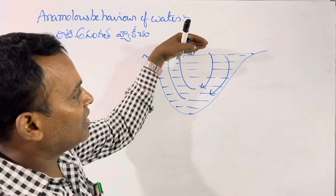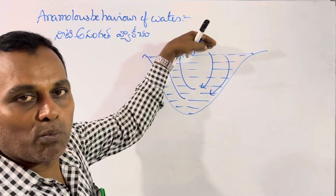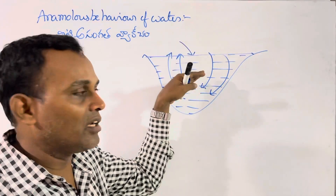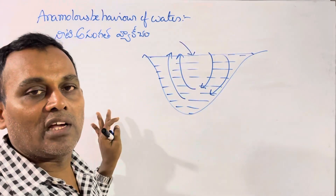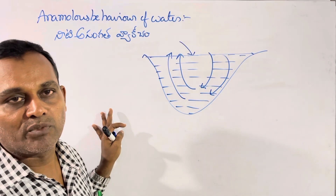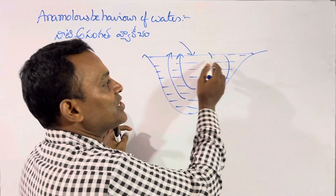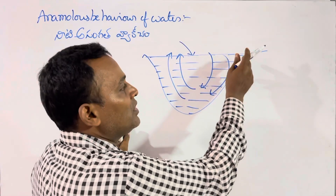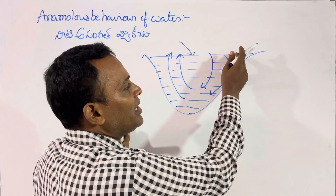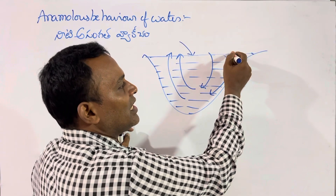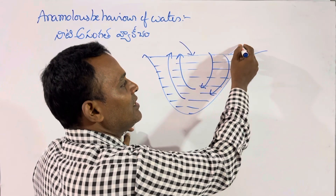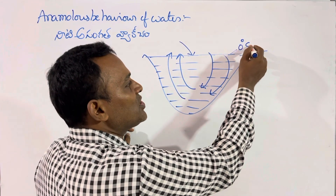Because ice is a bad conductor of heat, it does not allow the coldness to penetrate into the water below the layers. The temperature of the air input remains very low outside.